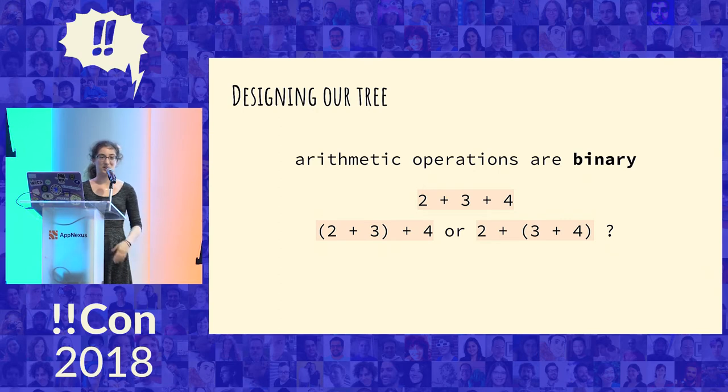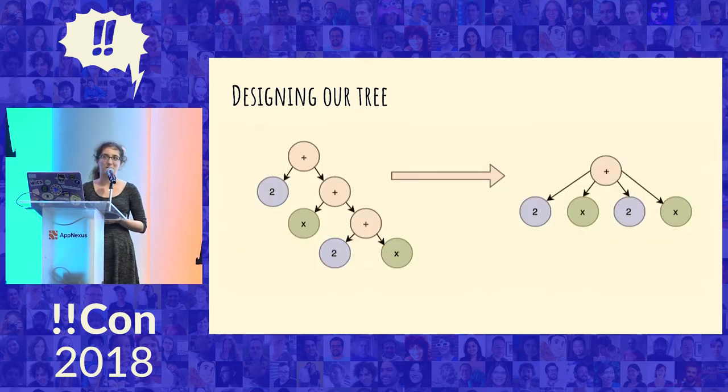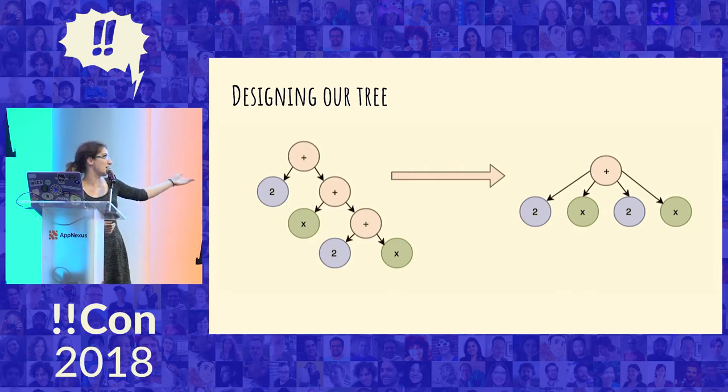And so the math.js tree that we got had all the addition was binary. But because addition and also multiplication are commutative and associative binary operations, they feel like they don't need to be binary, but they could have any number of arguments. So I think of additions more as like the tree on the right and not the tree on the left. And that is what the tree looks like in the math steps algorithm.